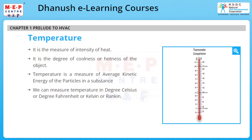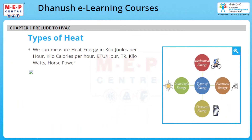After understanding the definitions of heat and temperature, let us understand the types of heat. Various forms of heat energy are mechanical energy, electrical energy, chemical energy, and solar or light energy, and so on. We can measure heat energy in kilojoules per hour, kilocalories per hour, BTU per hour, TR, kilowatts, and horsepower.